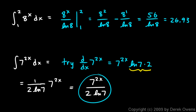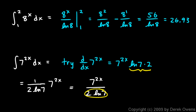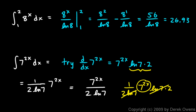To verify, I take the derivative: bring out the constant 1 over (2·ln(7)) and differentiate 7^(2x), which gives 7^(2x) times ln(7) times 2. Everything cancels, leaving just 7^(2x), which matches the integrand. So the correct answer is 7^(2x) over (2·ln(7)) plus c.